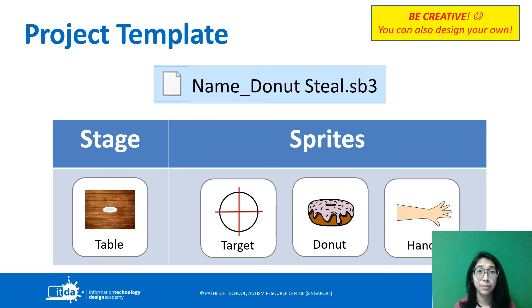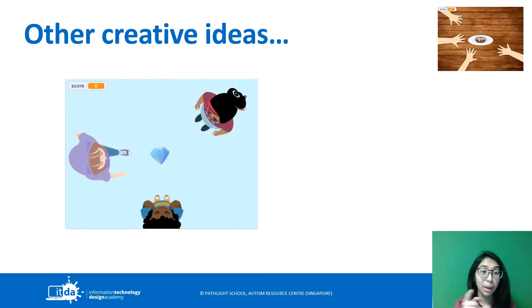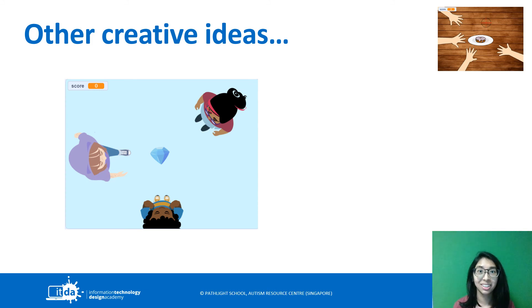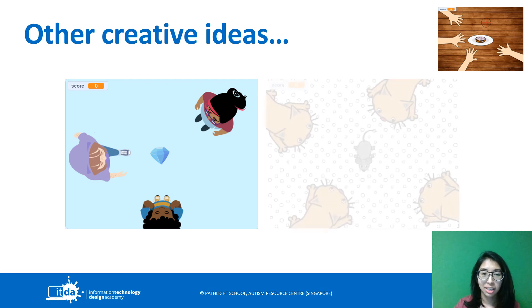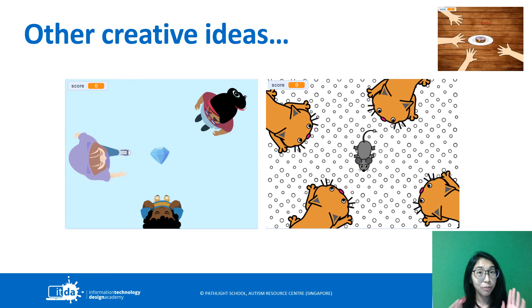If you don't like the sprites I've given you, you can also be creative and change the sprites on your own. For example, if you don't like Donut Steel, you can make it a Diamond Steel — put a diamond in the middle instead of the donut and have people sprites coming in. Or you can do a cat and mouse game where the cat replaces the hand coming in from the edge. If you don't want to do these other ideas, you can just stick to the Donut Steel idea.